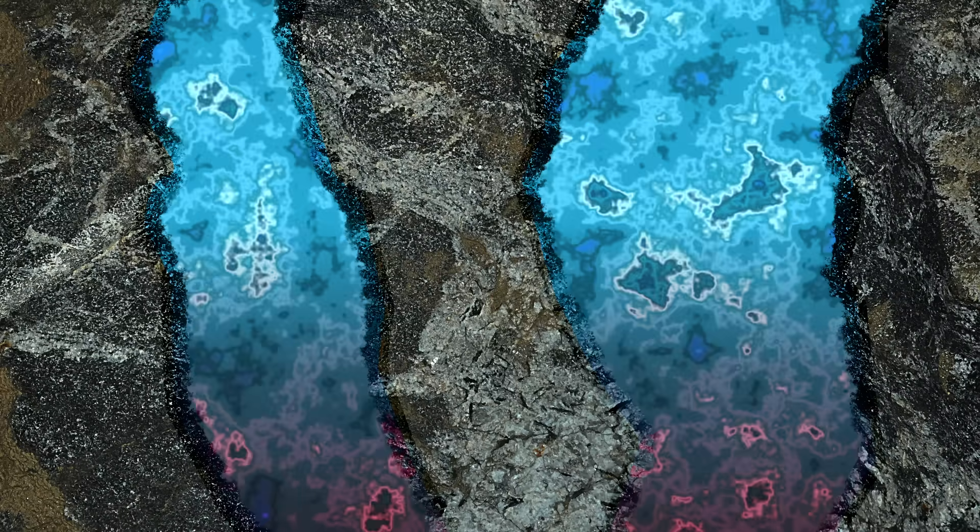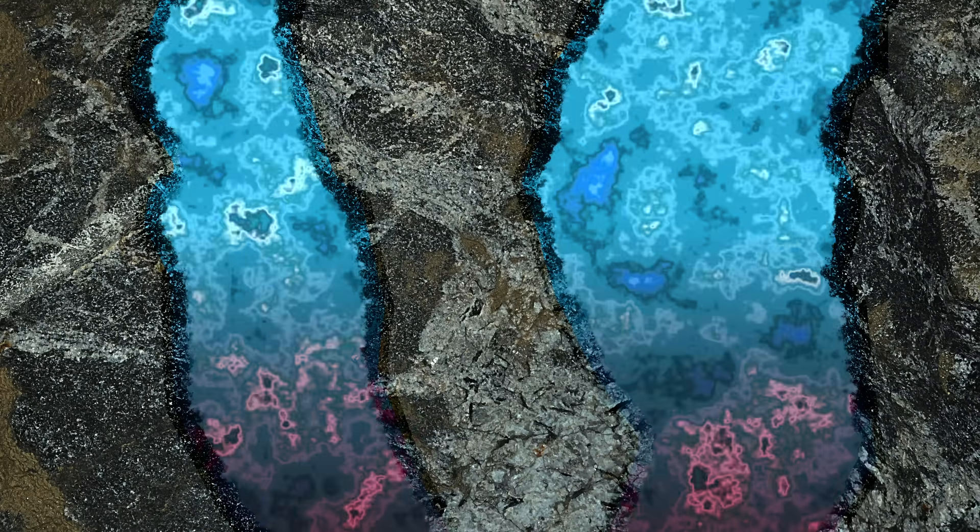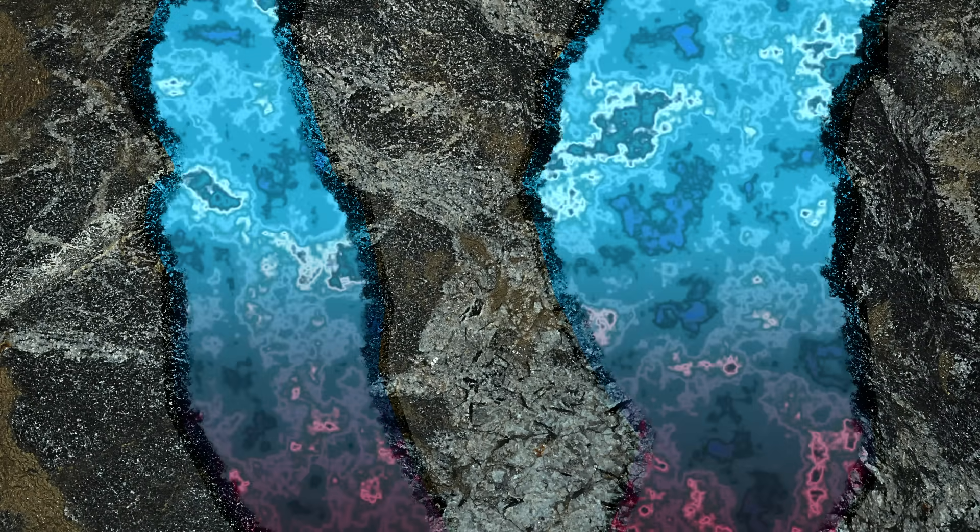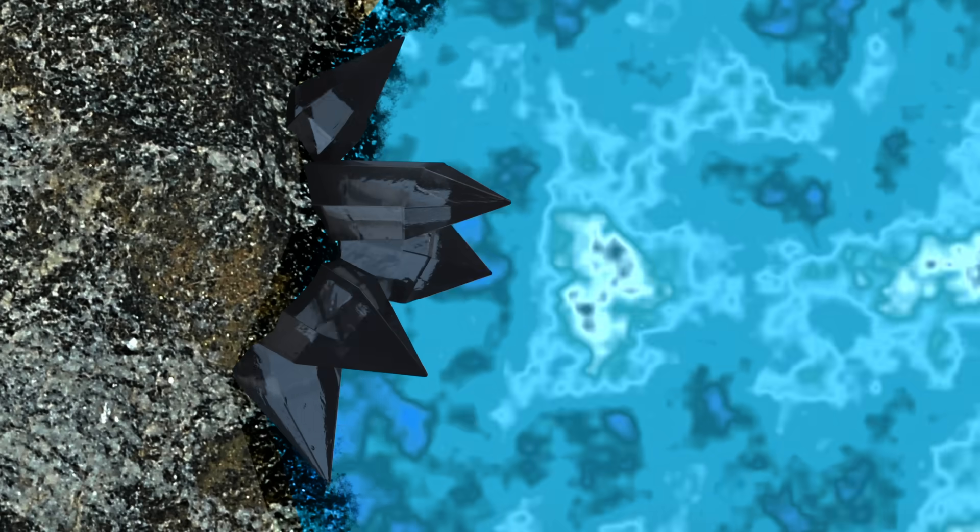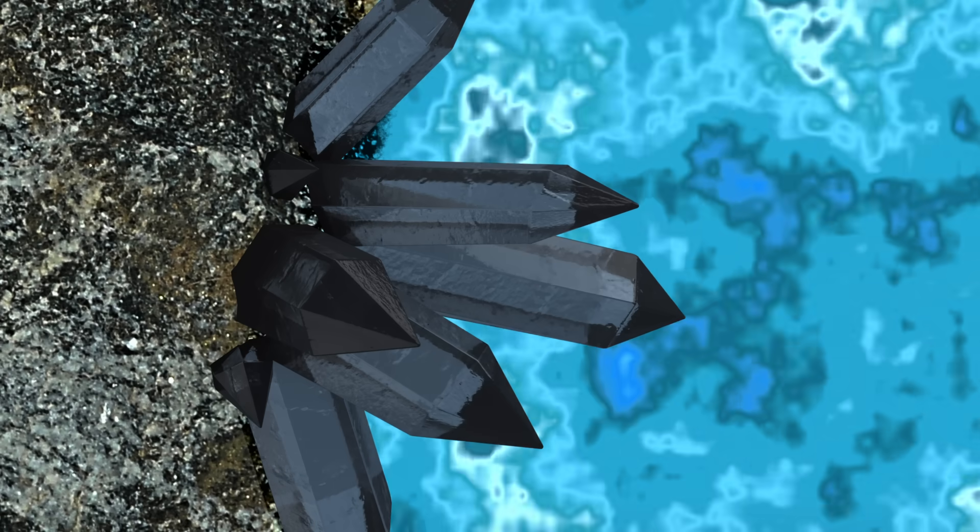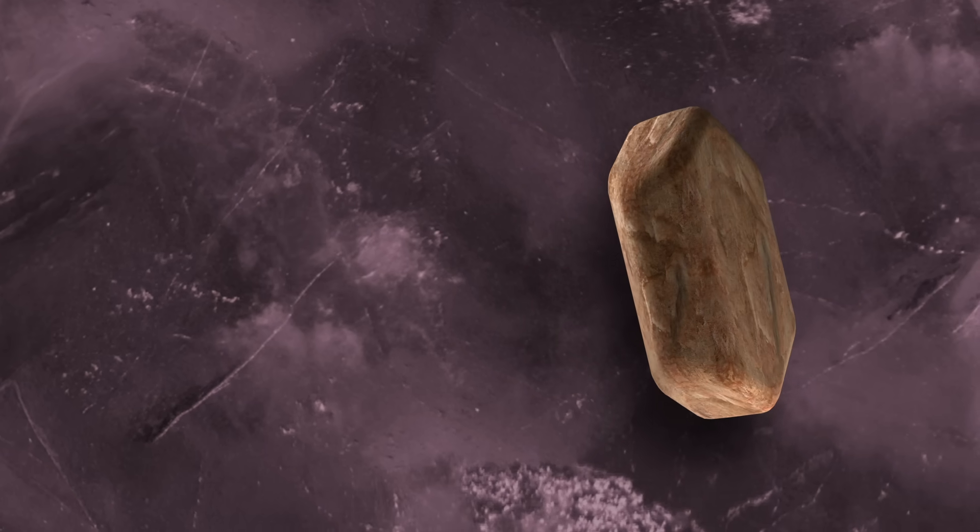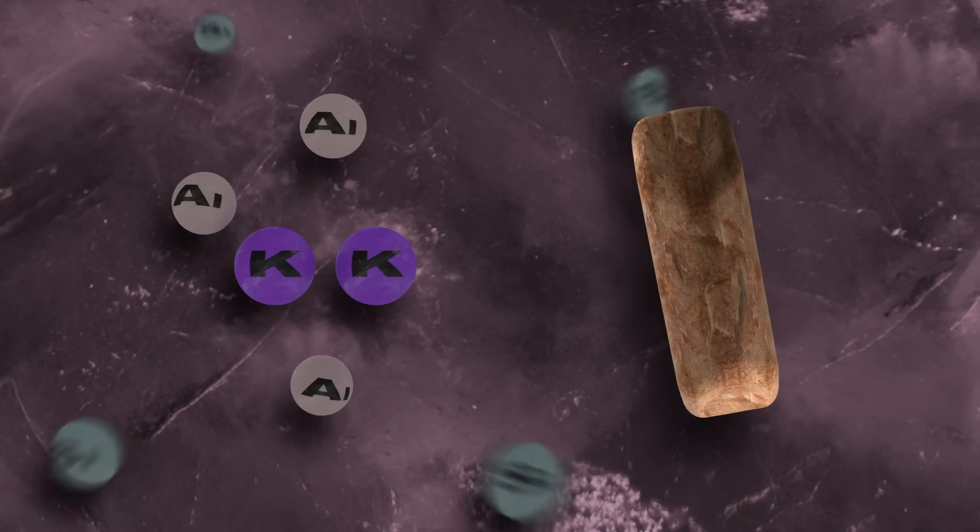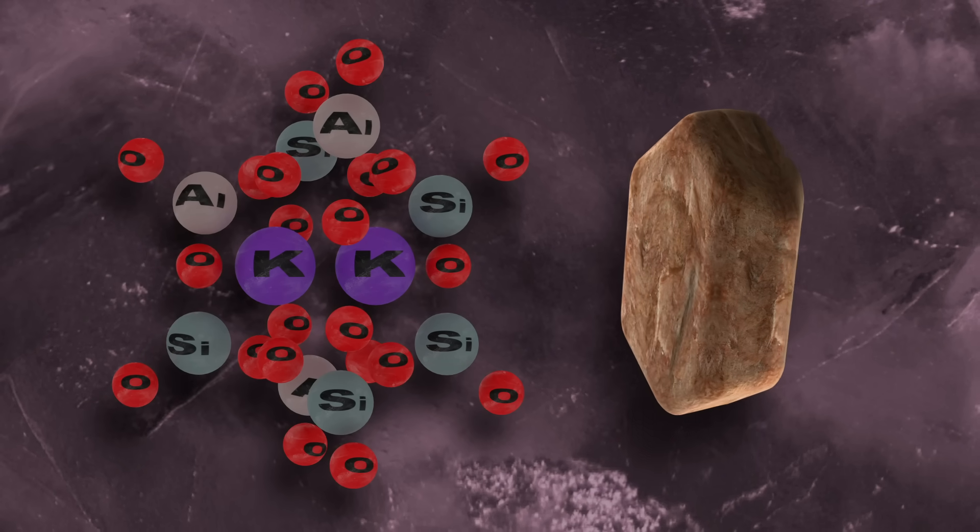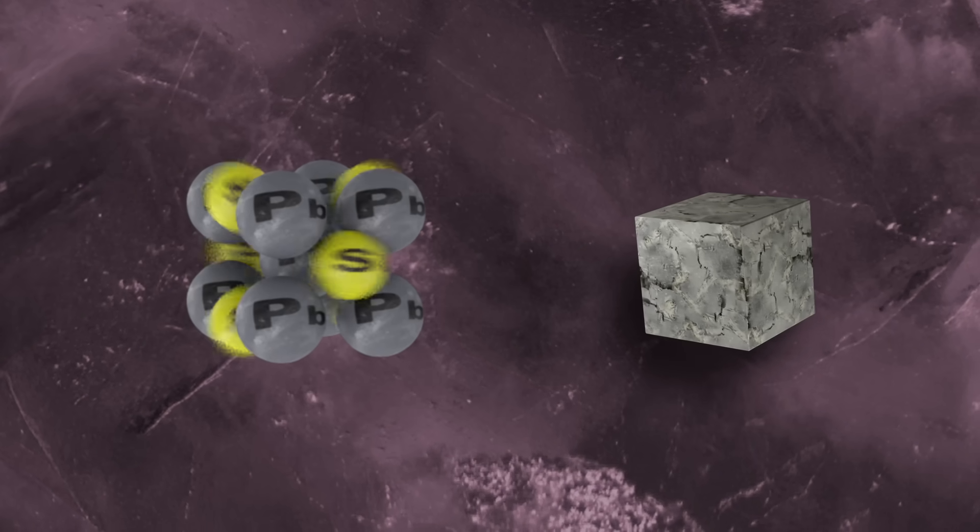The heat from these rocks drives groundwater towards the surface. As the water cools, ions precipitate out as mineral crystals, including quartz crystals from silicon and oxygen, feldspar from potassium, aluminum, silicon, and oxygen, and galena from lead and sulfur.